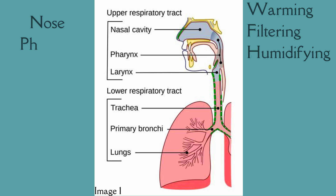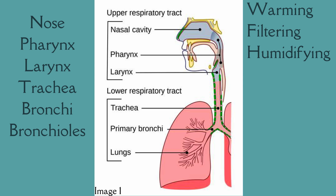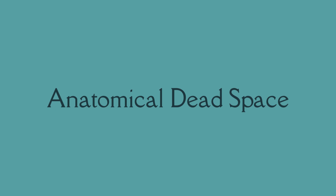The conducting zone includes the nose, pharynx, larynx, trachea, bronchi, bronchioles, and terminal bronchioles. None of these parts have a role in the exchange of respiratory gases, and for this reason, the conducting zone is also called anatomical dead space.